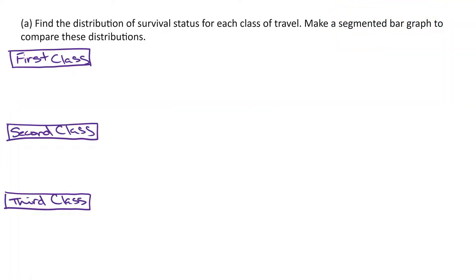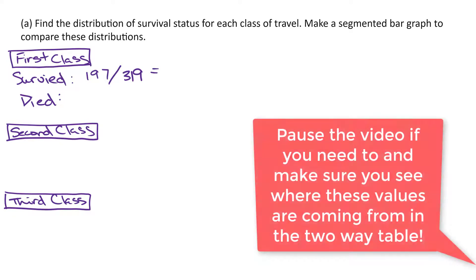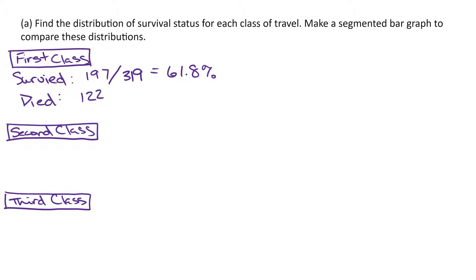Because we're asked to find the distribution of survival status for each class of travel, we're going to focus separately on the first class passengers, second class, and third class. So for the first class passengers, we need to look at who survived and who died. We're going to use our denominator, the total of those in first class, and then what proportion survived and what proportion died. So for example, we had 197 passengers in first class who survived. Out of all the first class passengers, that was a total of 319. So we'll say about 61.8% of first class passengers survived. So we had 122 passengers that were first class that died out of the 319. And so that worked out to the 38.2%. So give these a try. Try to go through and find the same distributions for second class and third class, and then we'll check.